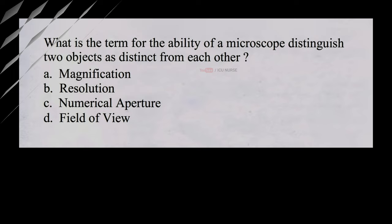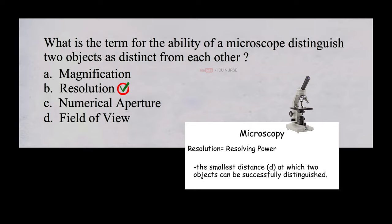What is the term for the ability of a microscope to distinguish two objects as distinct from each other? A. Magnification, B. Resolution, C. Numerical Aperture, D. Field of View. And the correct answer is B, Resolution. The ability of a microscope to identify two objects as distinct from each other is called resolution.